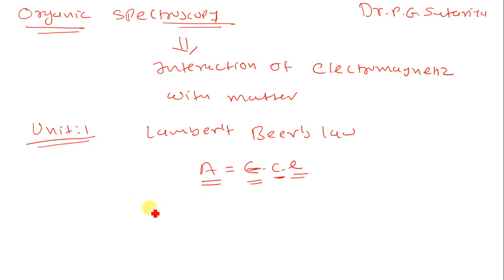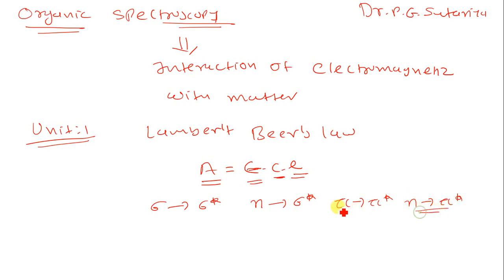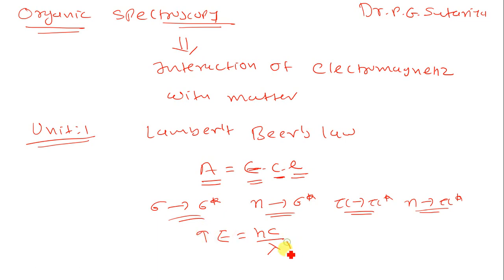After that, we studied about Electronic Transitions: Sigma to Sigma Star, N to Sigma Star, Pi to Pi Star, and N to Pi Star transitions. You have to remember the formula E is equal to hc upon Lambda. When your energy is increasing, your Lambda maximum will be decreasing. This is what we have studied so far — the spectroscopic definition, Lambert-Beer's Law, and the four electronic transitions.